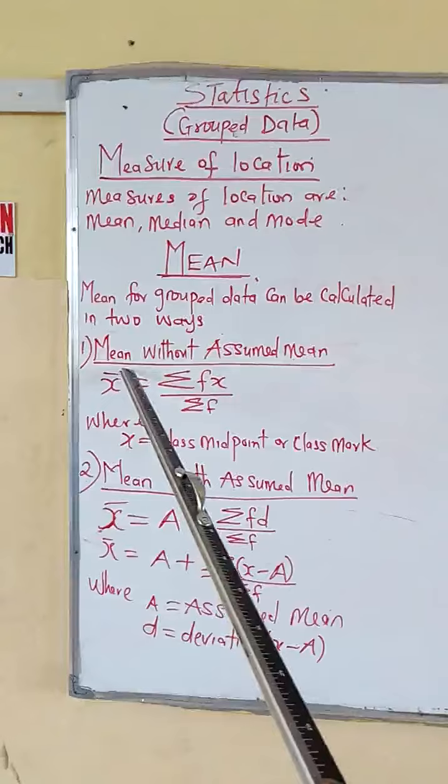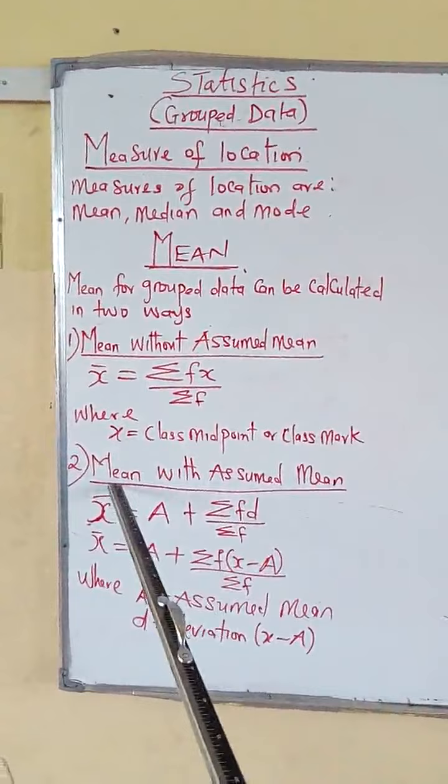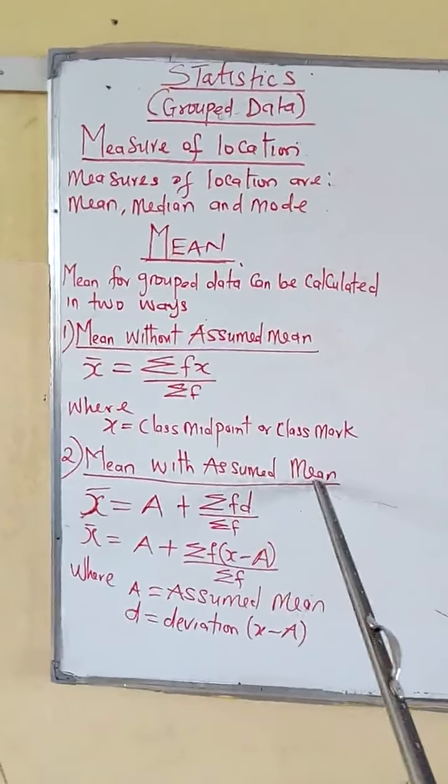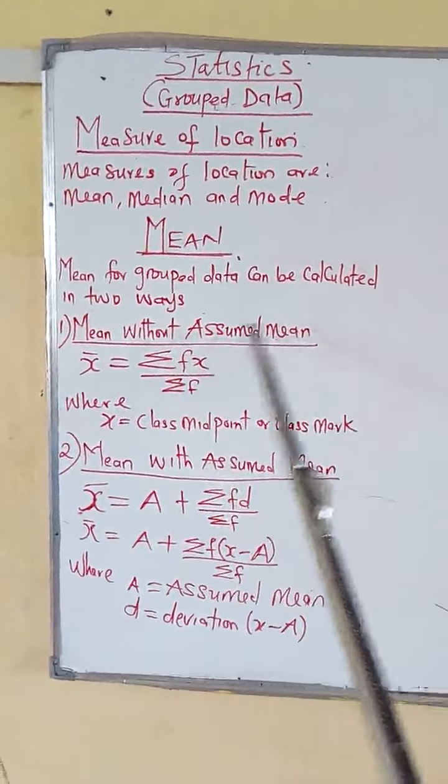The first one is mean without assumed mean, and the second one is mean with assumed mean. Now, mean without assumed mean is given by this formula: summation FX over summation F.